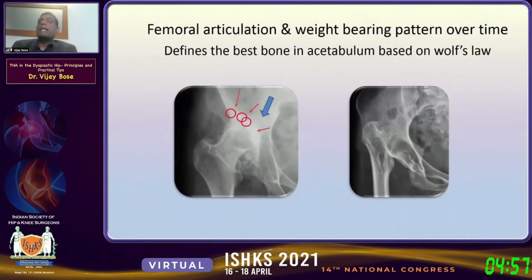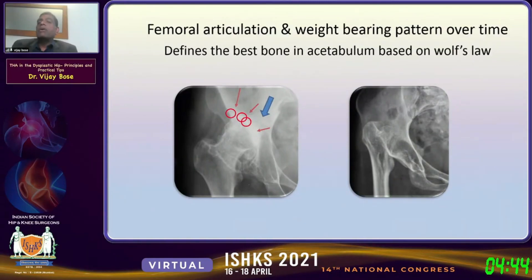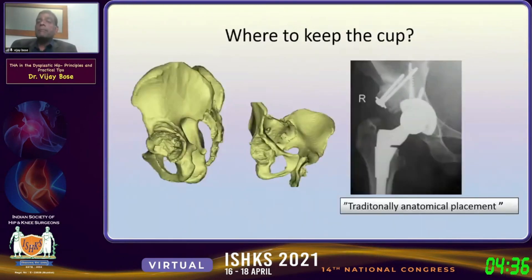The femoral articulation and weight-bearing pattern define the best bone in the acetabulum, based on Wolff's law. We have to look at how bone remodeling has occurred in the pseudostabulum on the partially dislocated hips, and we need to know where the good bone is. That is a very important principle.